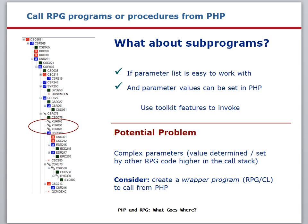Before you moan and groan about the extra work of another program, and whether it's slow to call an additional program, think back to the issue of the weight of the page. If you don't move the complicated parameter resolution into an RPG or CL wrapper, then you may end up writing complicated PHP code to call the program. Think back to the combination of five different languages used on a typical PHP page. Think about reducing the amount of code you put on the page, especially if the code is concerned with plumbing — that is, making calls out to other programs.